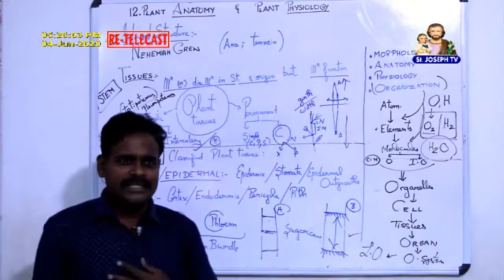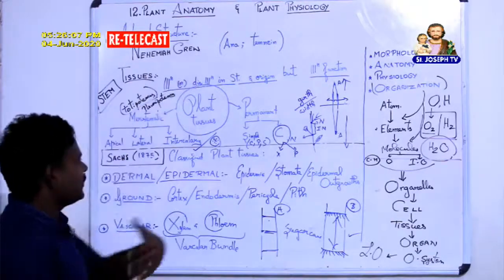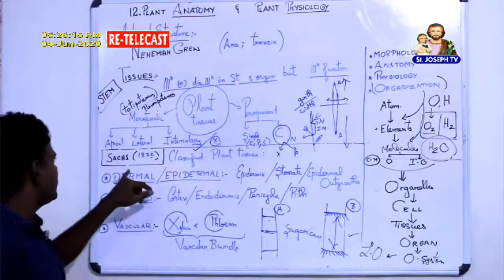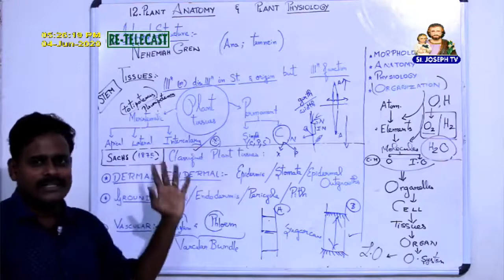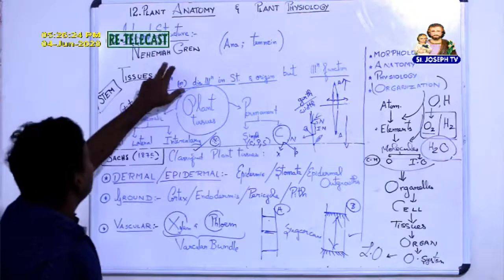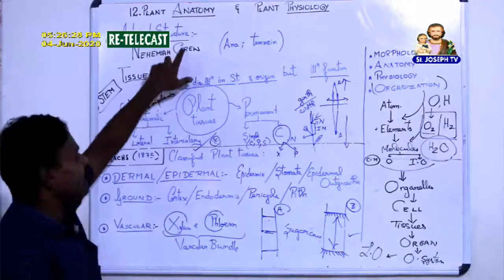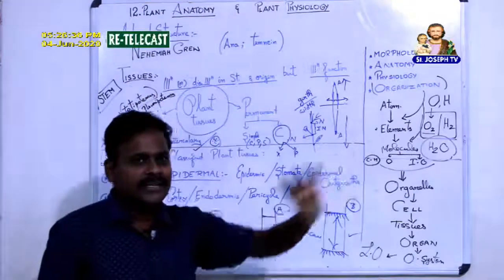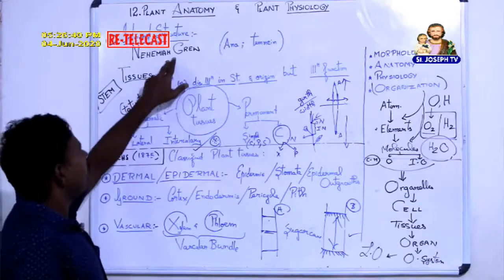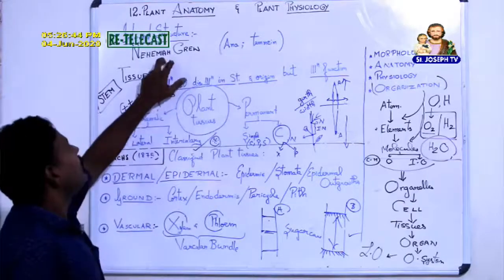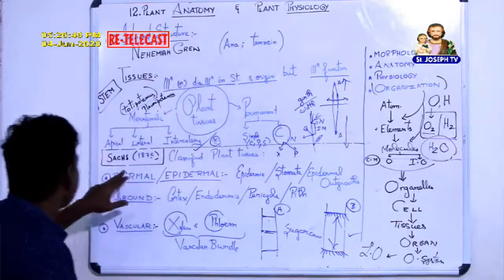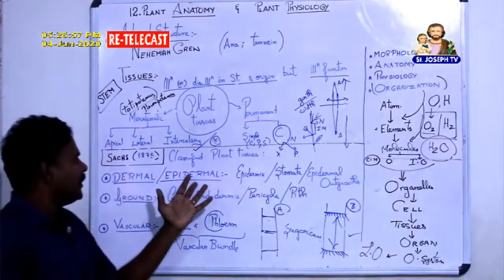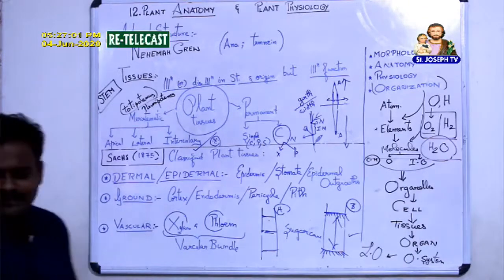So the first important one-mark fact: Nehemia Gru first published the internal structure of plants and is called the father of plant anatomy. The second scientist is SACS in 1875, who classified plant tissues into three types: one — dermal or epidermal tissue system; two — ground tissues; three — vascular tissues.